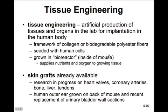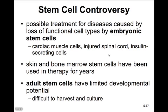Tissue engineering is the artificial production of tissues and organs in the lab for implantation into the human body. We create a framework of collagen or biodegradable polyester fibers and seed them with human cells. They grow in a bioreactor — for example, inside a mouse — which supplies nutrients and oxygen for the growing tissue. This technology is already available for skin grafts, and research is in progress to create heart valves, coronary arteries, bone, liver, and tendons using this methodology.